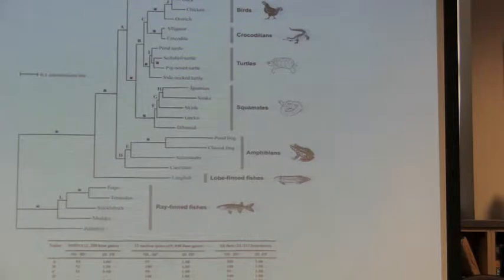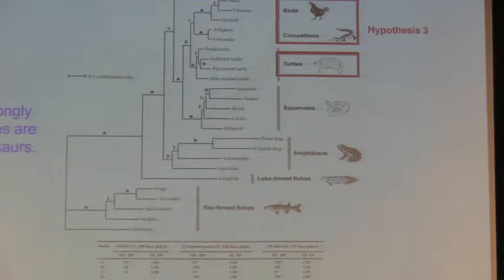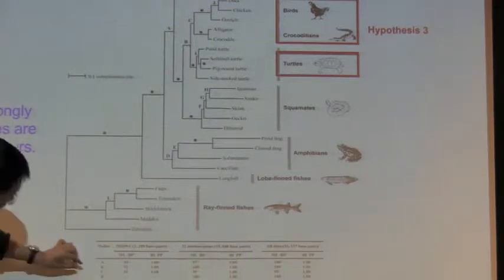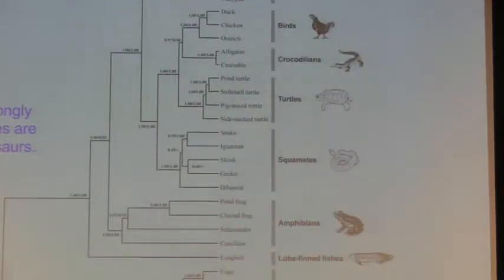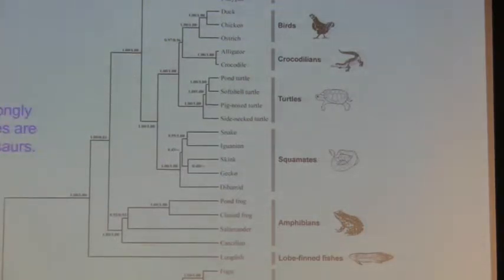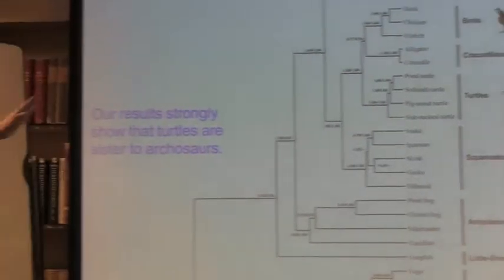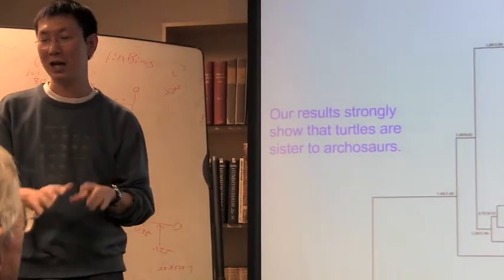The final answer is: turtles are close to archosaurs. This is the concatenation analysis — we combined all 23 genes together and used ML, MrBayes, and other methods. All point to this answer, very strongly, with bootstrap over 90 to 100%. Using Bayesian analysis — not depending on concatenation, but analyzing genes separately then combining — we got the same answers, with posterior probabilities over 0.90 to 0.95. Our results show that turtles are sister to archosaurs, so that's hypothesis three.